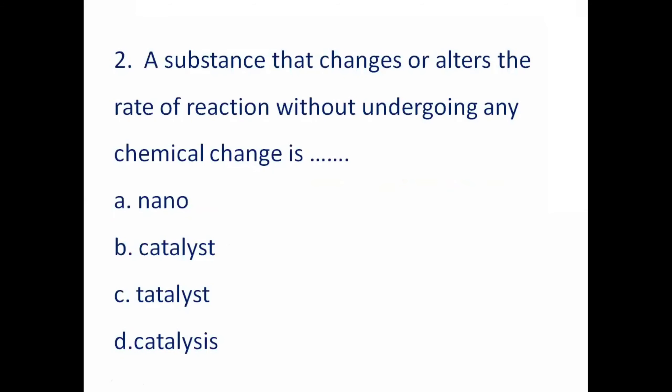A substance that changes or alters the rate of reaction without undergoing any chemical change is called: A) Nano, B) Catalyst, C) Catalyst, D) Catalysis. The right answer is B — catalyst. A substance that changes or alters the rate of reaction without undergoing any chemical change is called a catalyst.